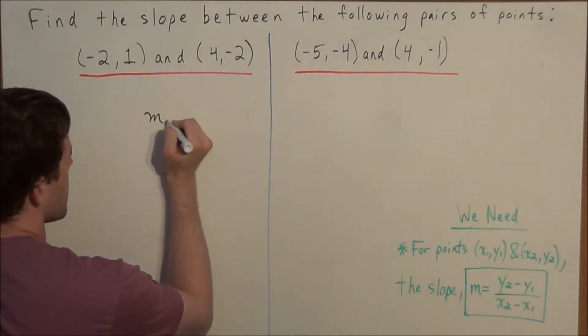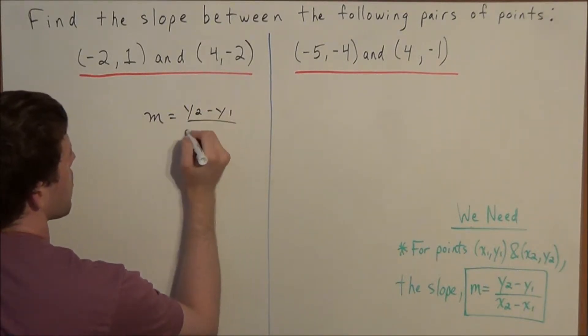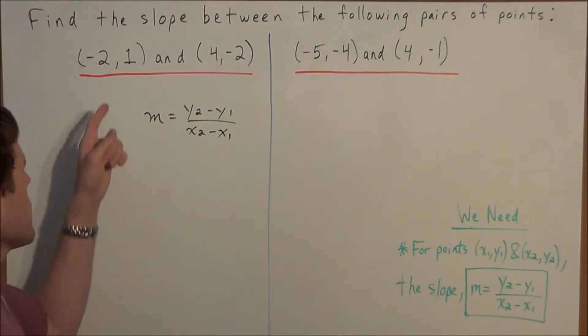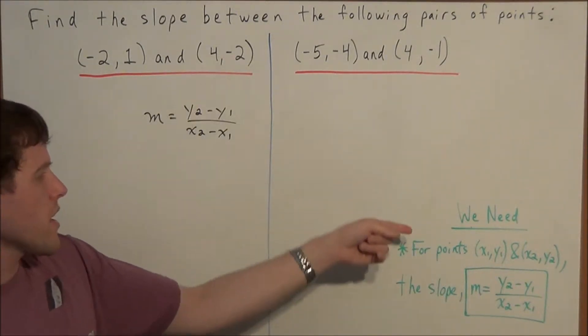So we get started by setting up this equation, we have y2 minus y1 over x2 minus x1. And what we could do is we could designate one of these points to be x1, y1 and we could designate the other point to be x2, y2.